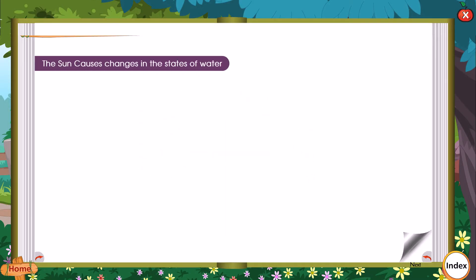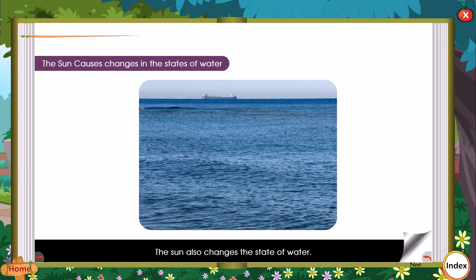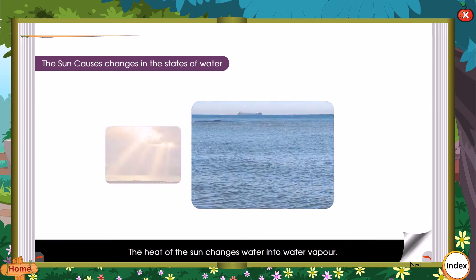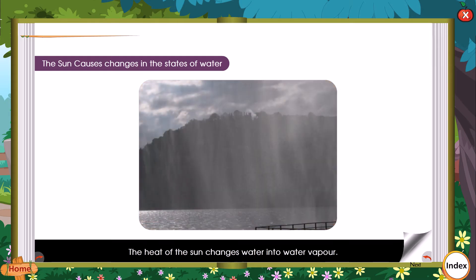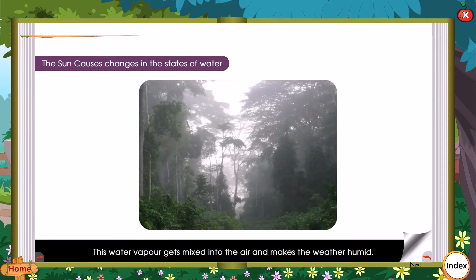The sun also changes the state of water. The heat of the sun changes water into water vapour. This water vapour gets mixed into the air and makes the weather humid.